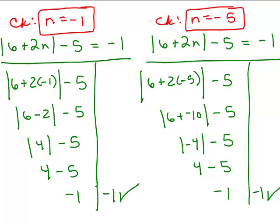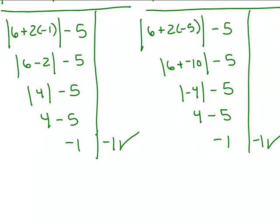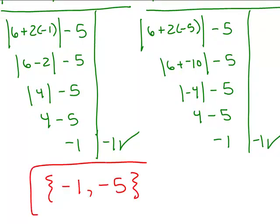We can write those in a solution set: negative 1 and negative 5 are the solutions to that absolute value equation.